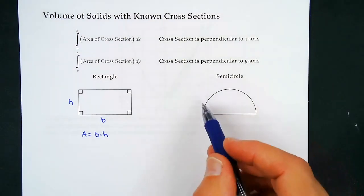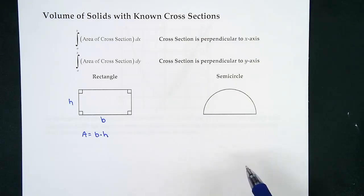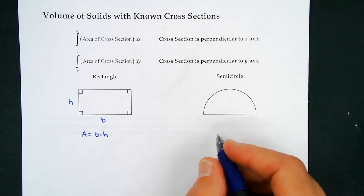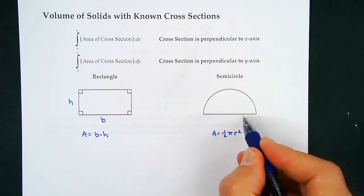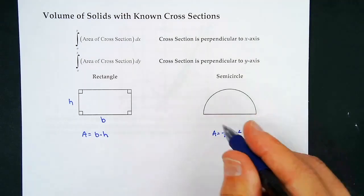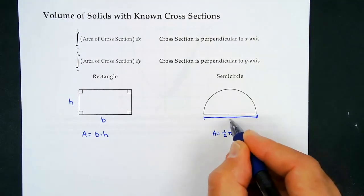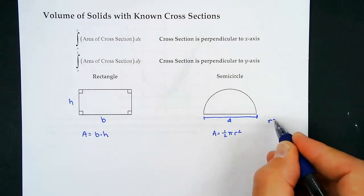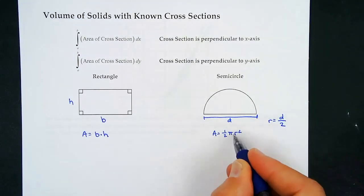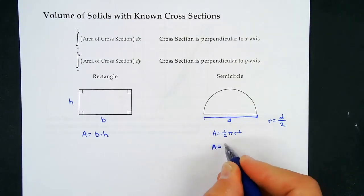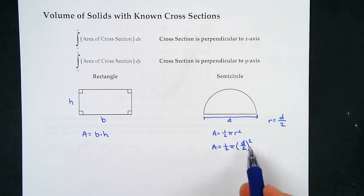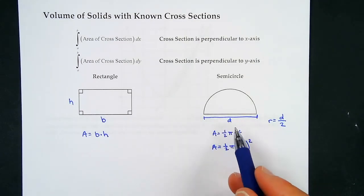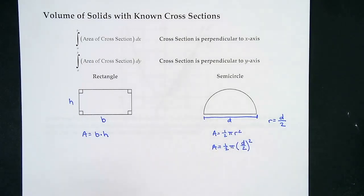For a semicircle: the area of a full circle is π r², so the semicircle area is one-half π r². What we'll have is the diameter landing in our region. If we're given the diameter, the radius is diameter divided by 2. So the area formula becomes one-half π times (d/2)², and d we get by taking the right minus the left, or top minus bottom, depending on whether the cross-section is perpendicular to the x-axis or y-axis.